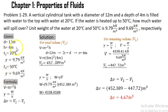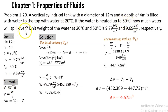Now that we are done identifying our given, what we need to do is identify what formula we should use. In our problem, it is looking for how much water will spill over, or the amount of volume displaced. To solve for the volume displaced, we need to have the value for total volume and the remaining volume.